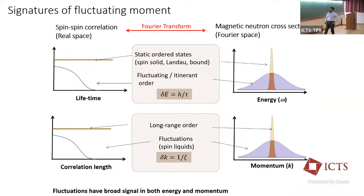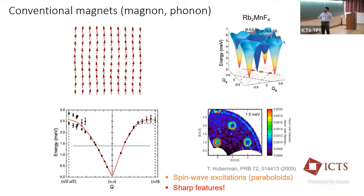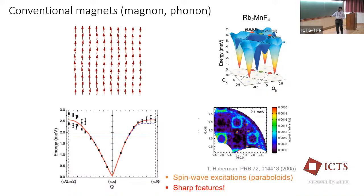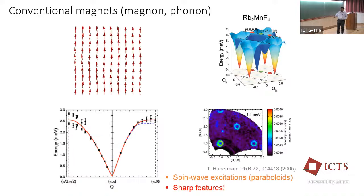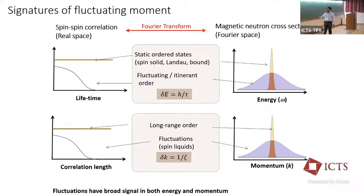In conventional magnets you get magnons, and with a fluctuating moment you get these magnon ring-like shapes in in-plane scattering — conical structures that are very sharp. These are the parabolas you'd get from a conventional antiferromagnet; depending on what energy you cut at, you get round sharp shapes. But fluctuating order means the features have a small lifetime. Fourier-transforming something with a small lifetime looks broad in energy. Similarly, short-range order looks broad in momentum space. So what we're really looking for are fluctuating, short-range order moments.